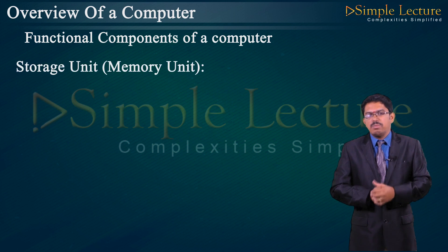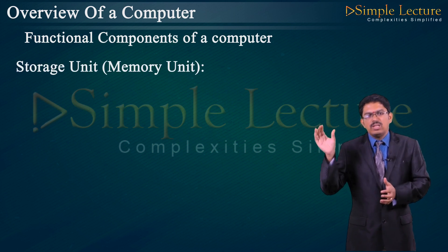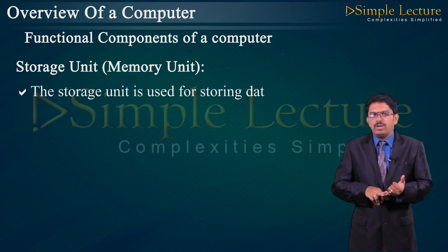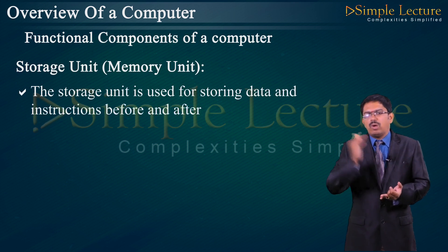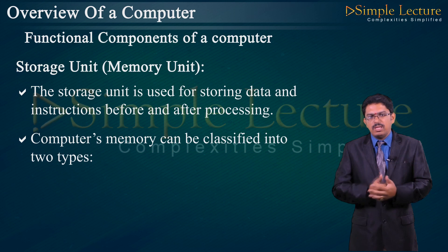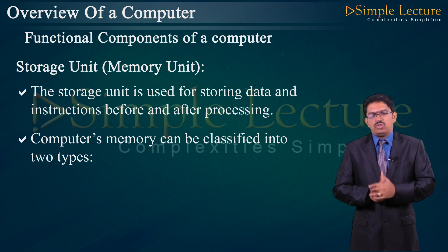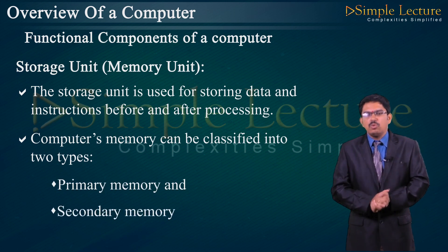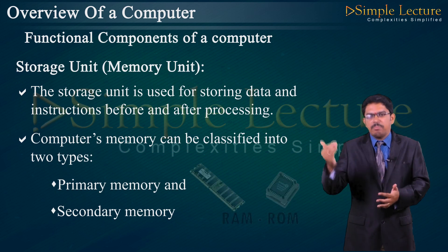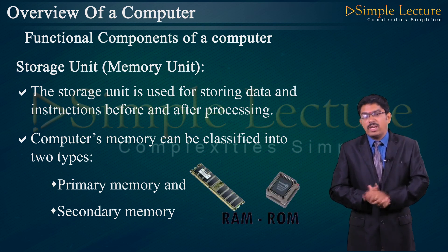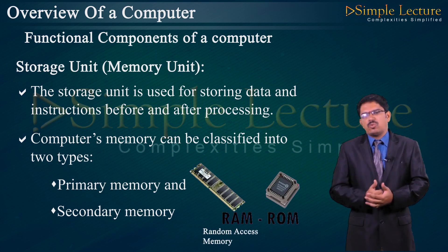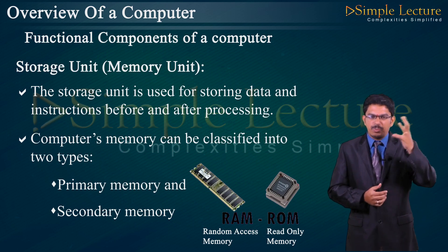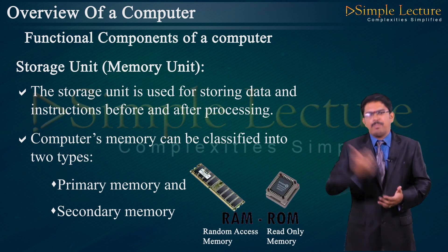The second unit is the storage unit, also called the memory unit. Storage is a space where data can be stored. It is used for storing data and instructions before and after processing. Computer memory is classified into two types: primary memory and secondary memory. Primary memory includes RAM (Random Access Memory) and ROM (Read Only Memory). Secondary memory consists of external devices such as hard disk and USB/pen drives.